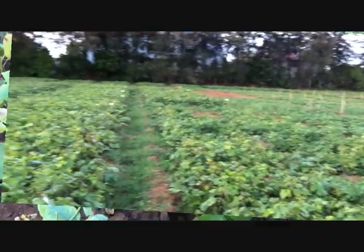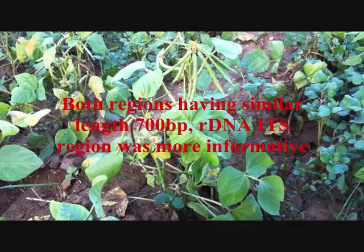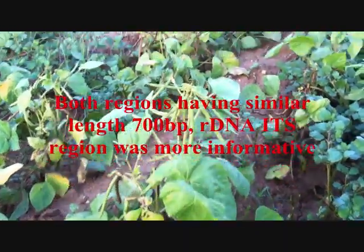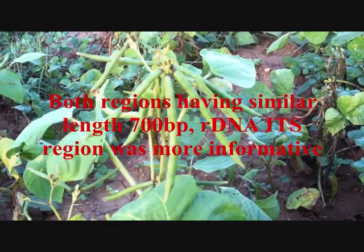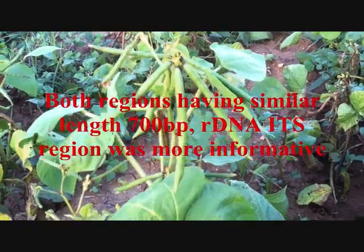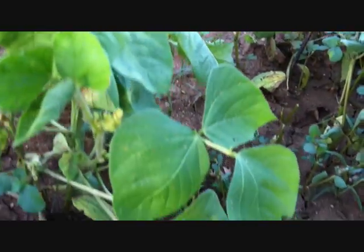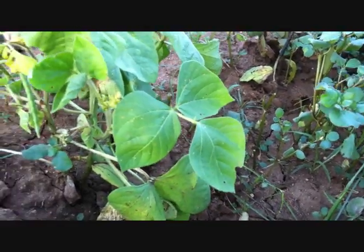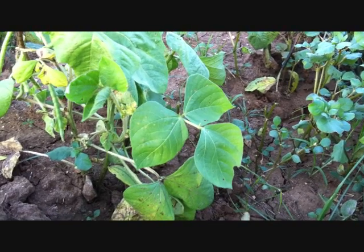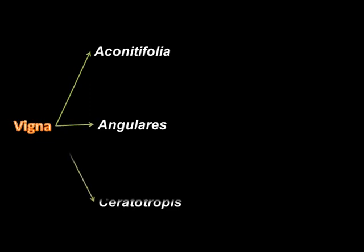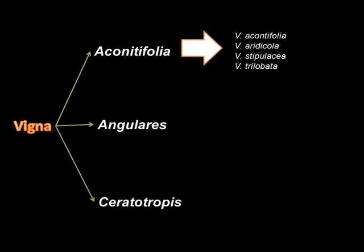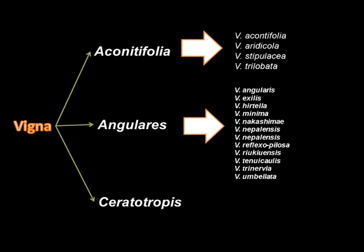Using both ribosomal DNA and chloroplast DNA genome regions, the Vigna subgenus Ceratotrophis germplasm was analyzed. Both sets of sequences were of similar lengths, about 700 base pairs, but compared to the chloroplast DNA region, the ribosomal DNA ITS region was more informative, having 170% polymorphic sites. Based on the results, the Vigna genus is subdivided into three groups according to sections: aconitifolia, angularis, and Ceratotrophis.